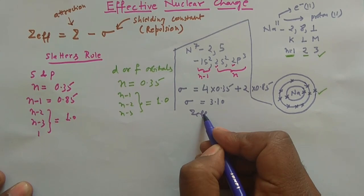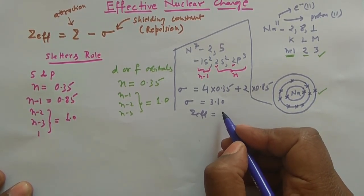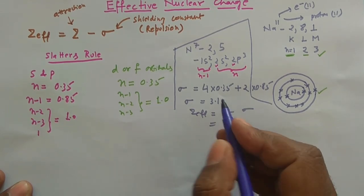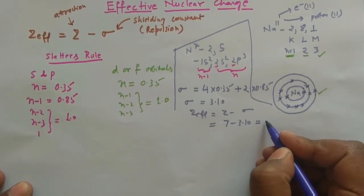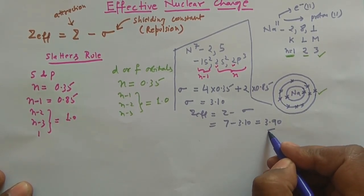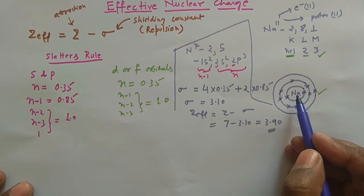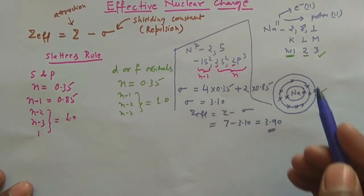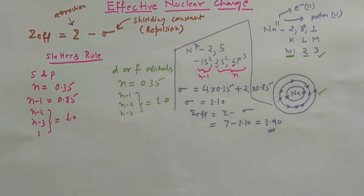With σ = 3.10, the effective nuclear charge is Z_effective = Z − σ = 7 − 3.10 = 3.90. So the effective nuclear charge experienced by the outermost (5th) electron of nitrogen is 3.90. This shielding constant value would obviously be different for other electrons in the atom.